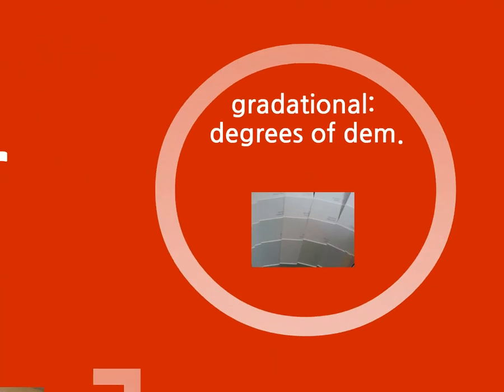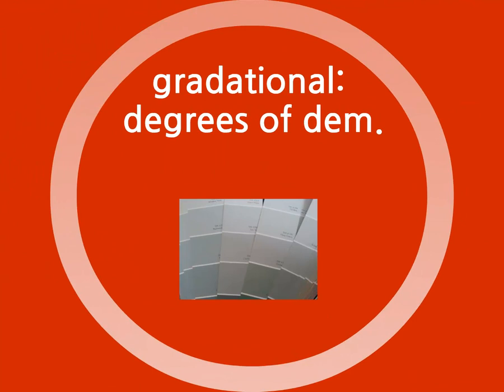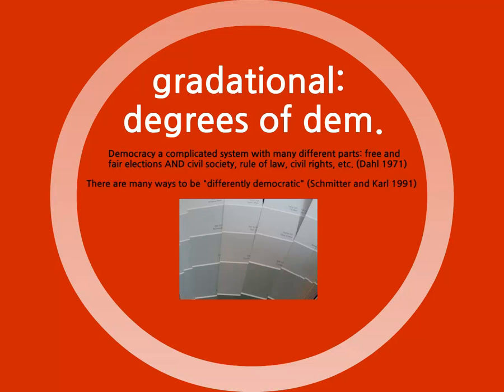The alternative is a gradational measure of democracy. Here we can think of democracy as the end point on a continuum from complete dictatorship to complete democracy, with many shades of gray in between. Robert Dahl's famous idea of polyarchy is an example of this, as he identifies many different aspects that go into democracy like civil rights and media freedoms, in addition to free and fair elections. This is in line with the Schmitter and Carr article, in which they note that there are many ways to be differently democratic. Freedom House scores are probably the most famous ranking of democracy and non-democracy, and they are clearly gradational.